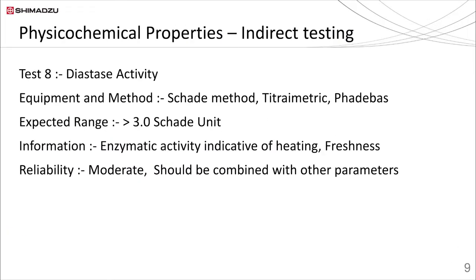Honey also contains certain enzymes in small quantities, but their activity measurement can be useful to identify storage conditions, freshness or purity. In honey, enzyme activity is measured in terms of diastase activity, as diastase is a major enzyme, along with invertase and glucose oxidase. Diastase activity is also often correlated with hydroxymethylfurfural (HMF) content in honey. The level of diastase activity may reduce with heat or long storage. It is a simple titrimetric method requiring no specific instrumentation, measured in Schade units — anything more than 3 Schade units is considered a good value.